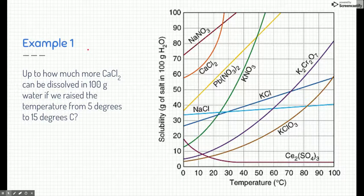Did you pause it? Alright, let's see if we can check your answers. So we're looking at calcium chloride, and we're going to start at 5 degrees. I'm going to follow my line up to 5 degrees. It's right about there. So we're about 60 grams at that point. But we raised the temperature to 15 degrees. So I'm going to come up here 15 degrees, which is right about there. So we're about 70. So we went from 60 grams to 70 grams just by raising the temperature.